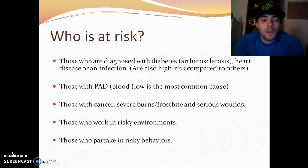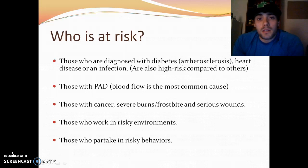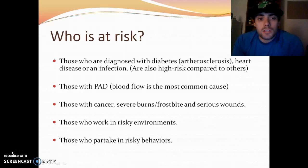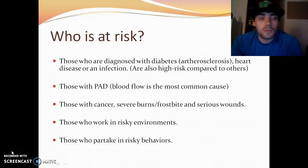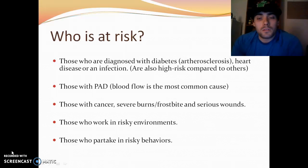Who is at risk? Those diagnosed with diabetes, because diabetes can lead to hardening of the arteries — atherosclerosis. Those diagnosed with heart disease or an infection are also considered high-risk. Those with peripheral artery disease and blood flow disabilities or disorders represent the most common cause of amputations. Other causes include cancers, severe burns, frostbite, and serious wounds.